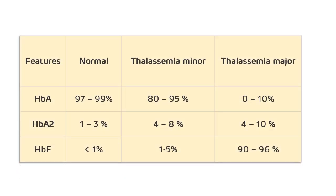This table shows the percentage of various hemoglobins in normal persons, thalassemia minor, and thalassemia major. In a normal person, HB A is 97–99% and fetal hemoglobin (HB F) is less than 1%. In thalassemia minor, HB A is 80–95% and HB F is 1–5%. In thalassemia major, HB F will be 90–96% and HB A will be reduced to 0–10%.